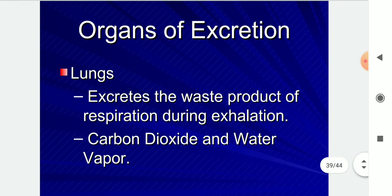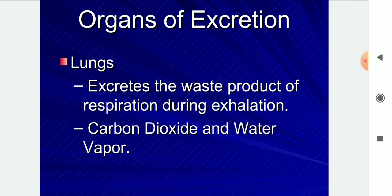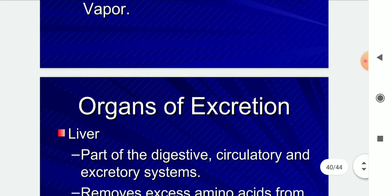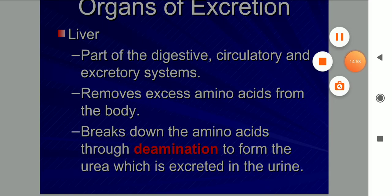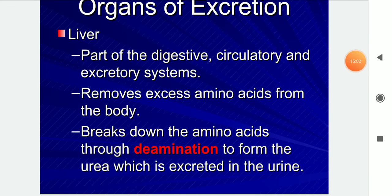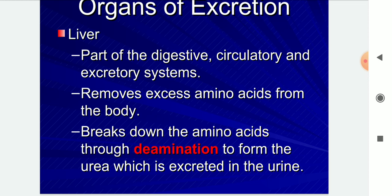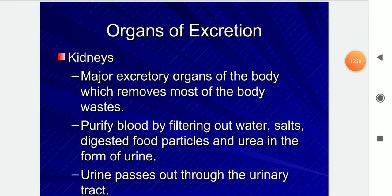The lungs excrete waste products of respiration — carbon dioxide and water vapor. The liver is part of the digestive, circulatory, and excretory systems; it removes excess amino acids from the body by breaking them down through deamination to form urea, which is excreted in the urine.